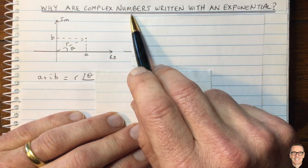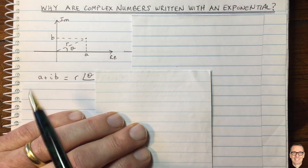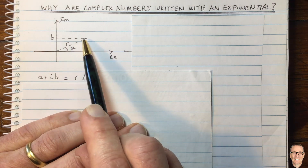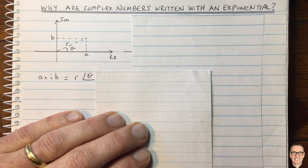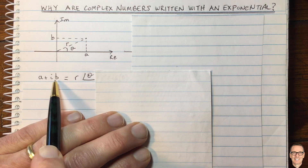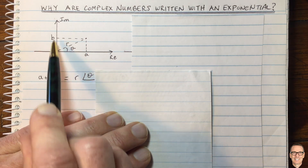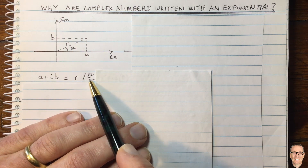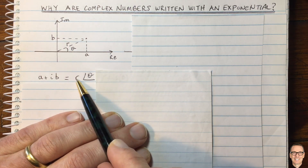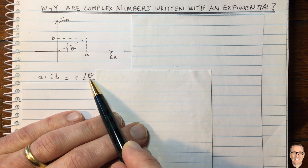Why are complex numbers written with an exponential? Here we've got a complex number with real and imaginary parts, and the two most common ways of writing that number: the Cartesian representation, where we have A plus iB, and the polar version with the amplitude and the angle, sometimes called the phase.